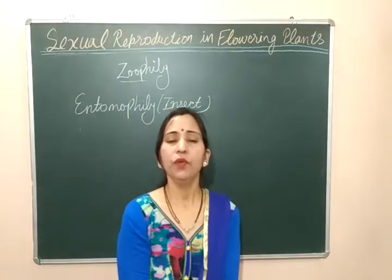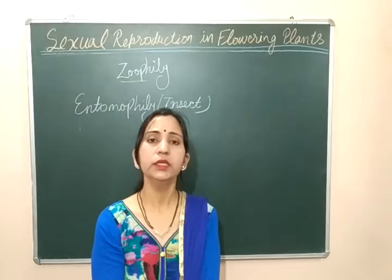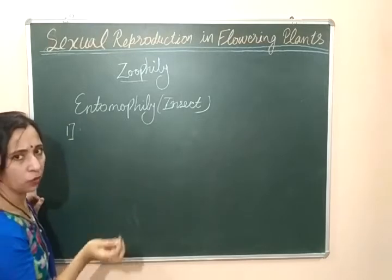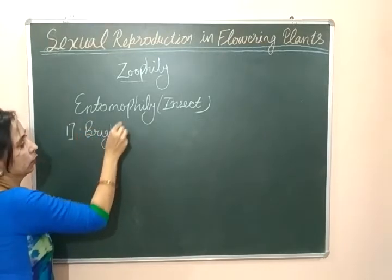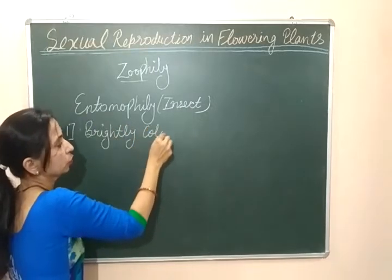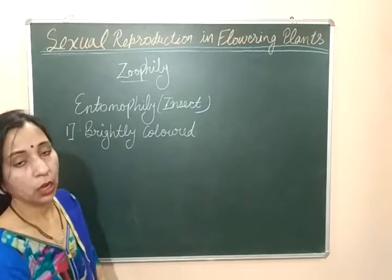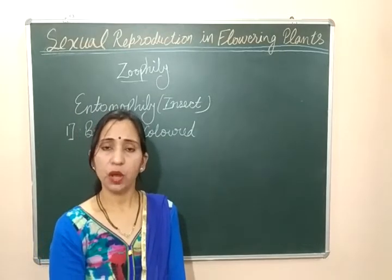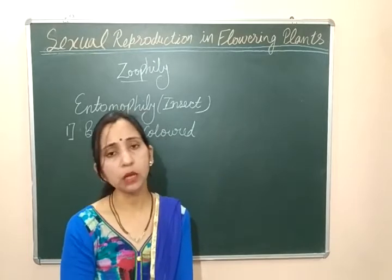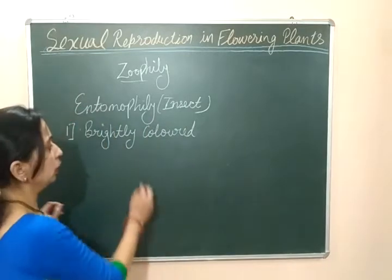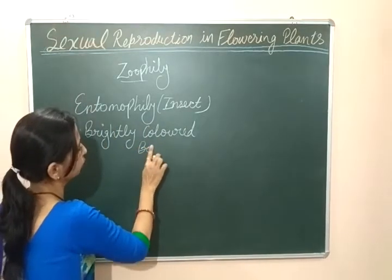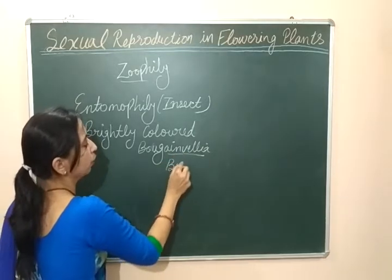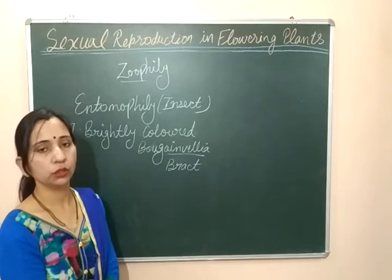In entomophily, we will discuss some characteristic features of the flower by which insects can be attracted for pollination. The first characteristic: the flower should be brightly colored so that insects can be attracted for pollination.